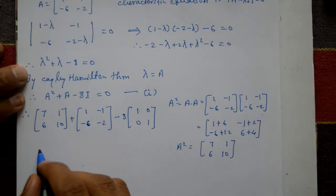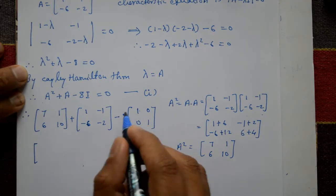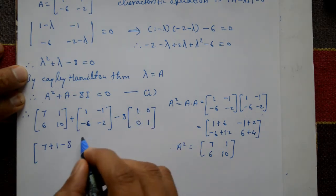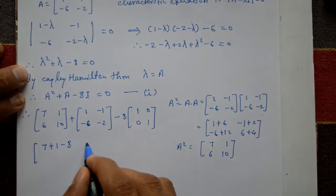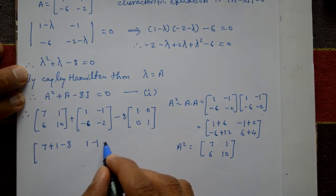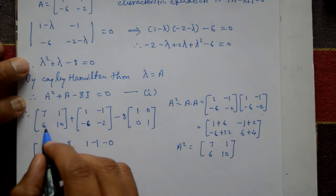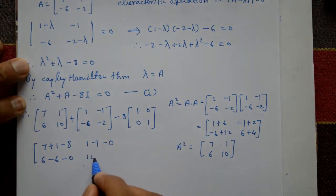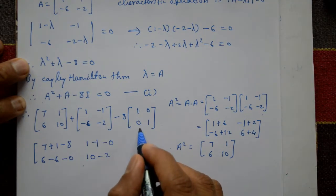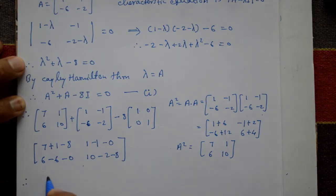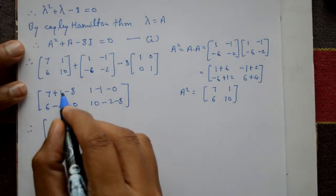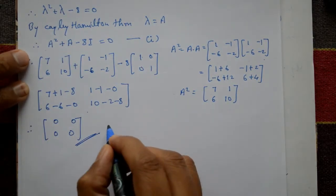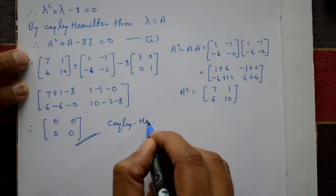Adding the matrices element by element: first element: 7 + 1 - 8 = 0. First row, second element: 1 + (-1) + 0 = 0. Second row, first element: 6 + (-6) + 0 = 0. Second row, second element: 10 + (-2) - 8 = 0. All elements are zero, so A² + A - 8I = [[0,0],[0,0]]. The Cayley-Hamilton theorem is verified.